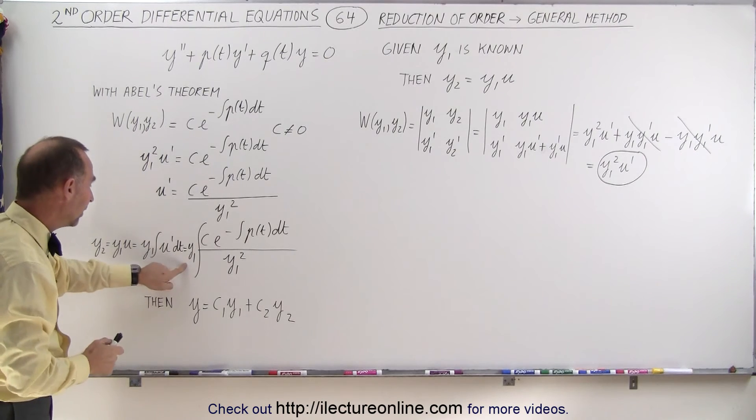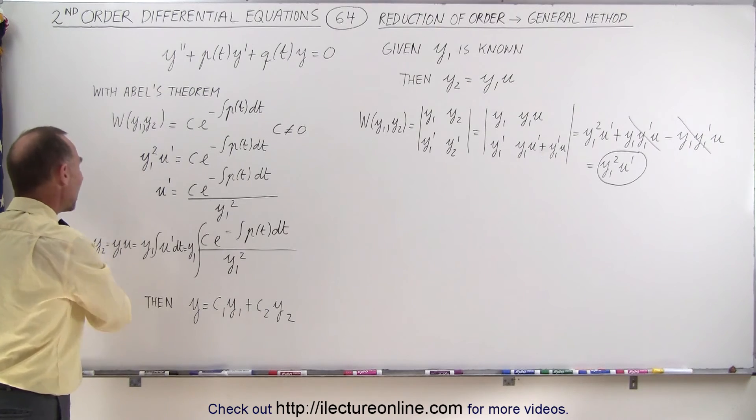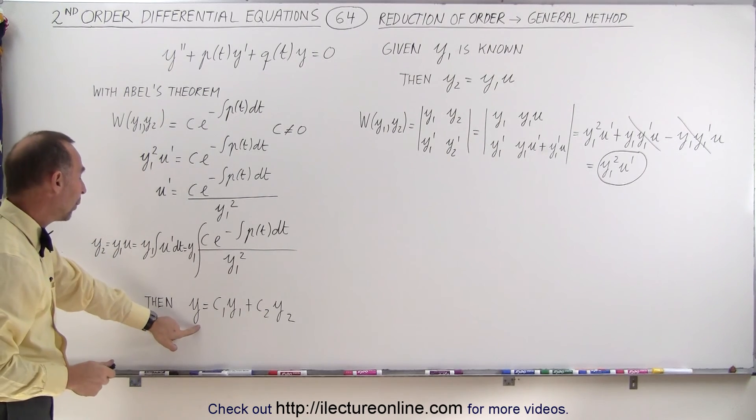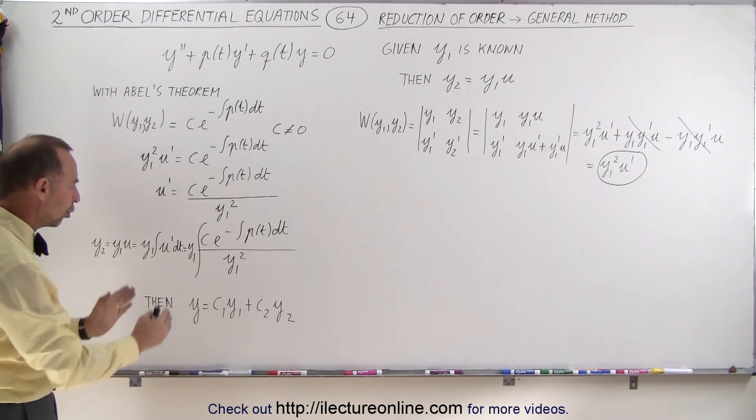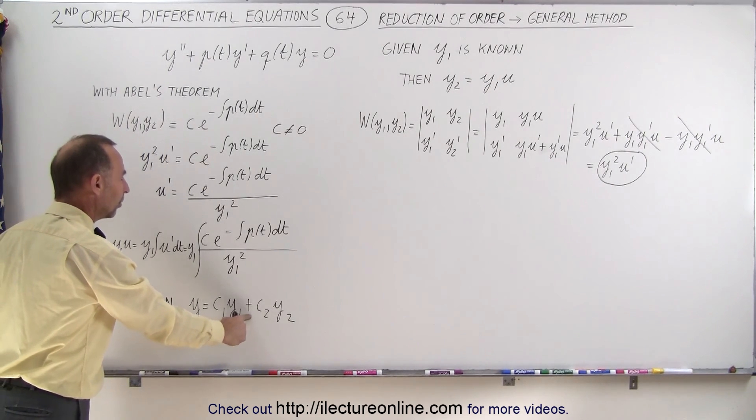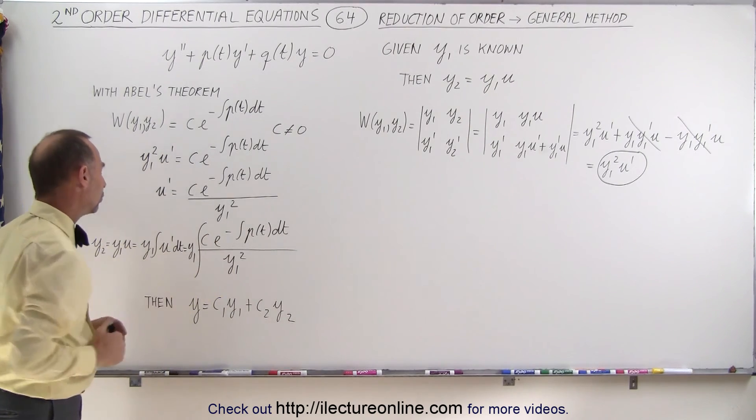So y1 times the integral of u prime, which is equal to this, will give us y2, and then finally, once you have y2, you then say y is equal to the homogeneous portion of the solution is some constant times y1 plus another constant times y2,